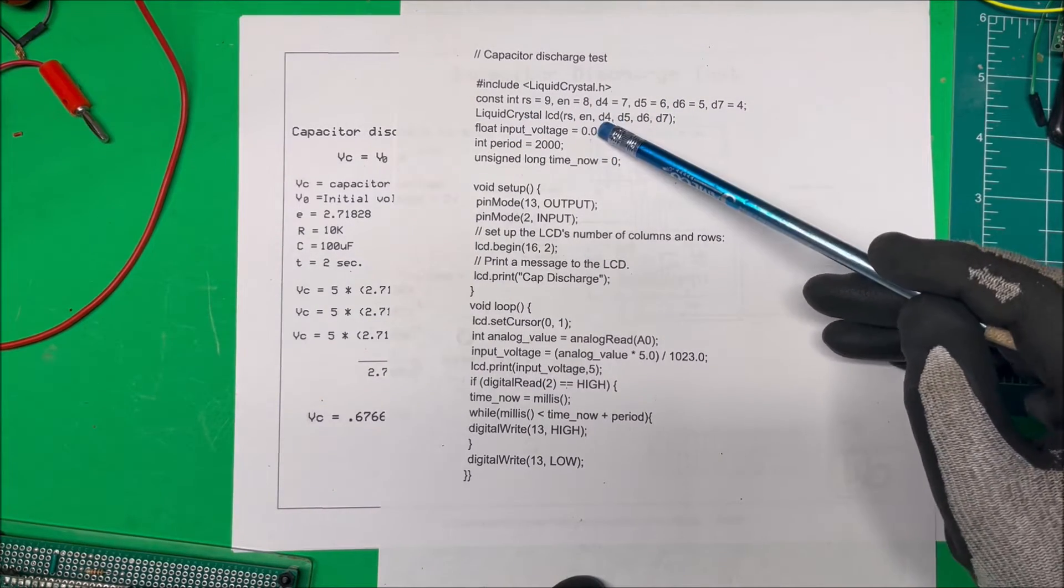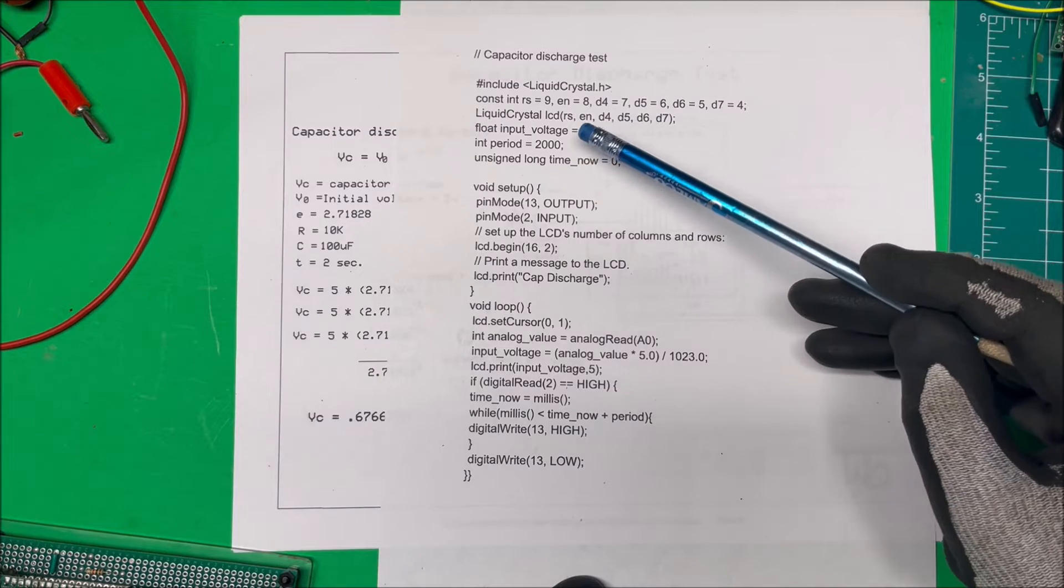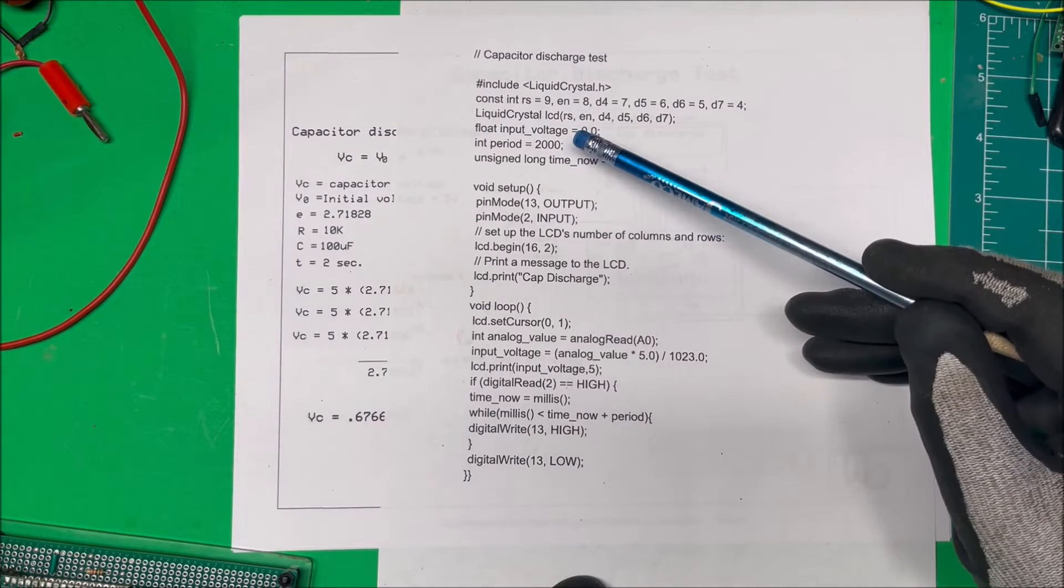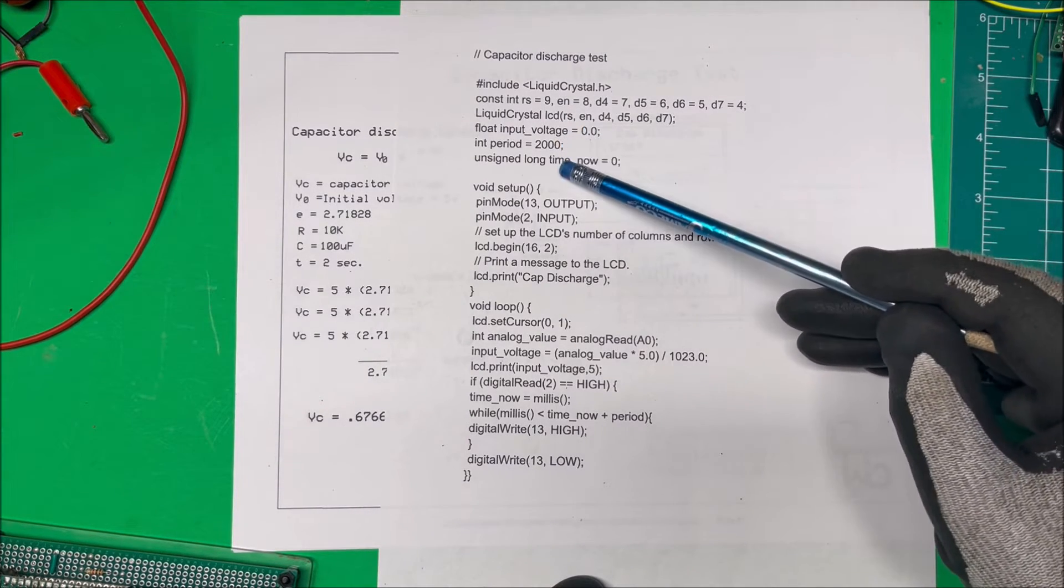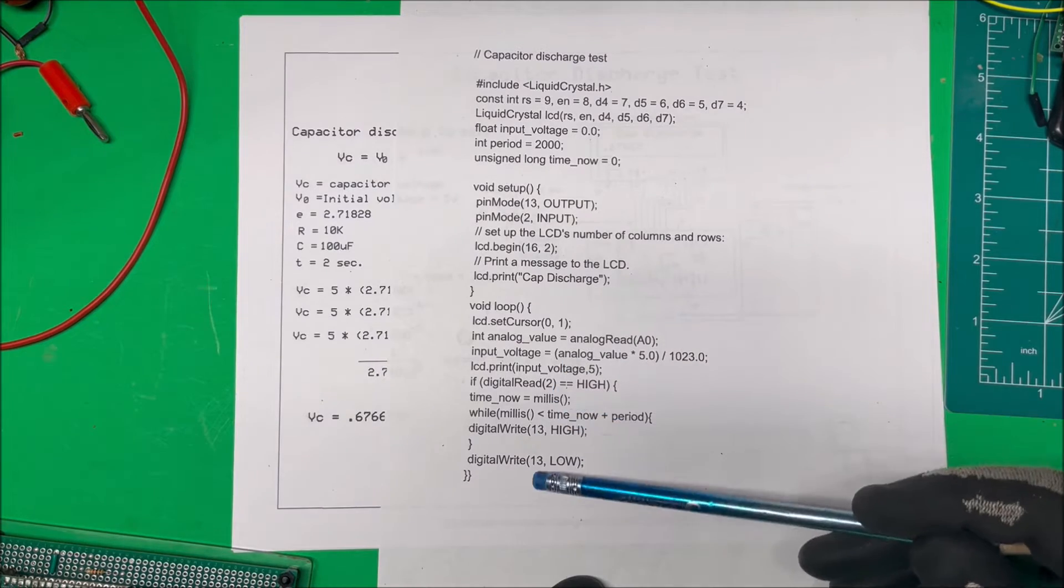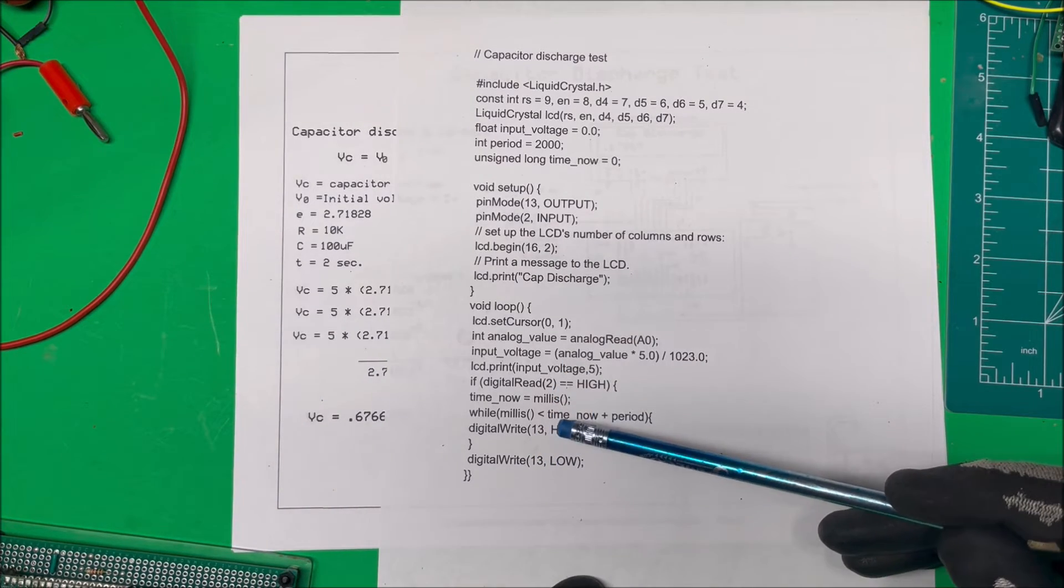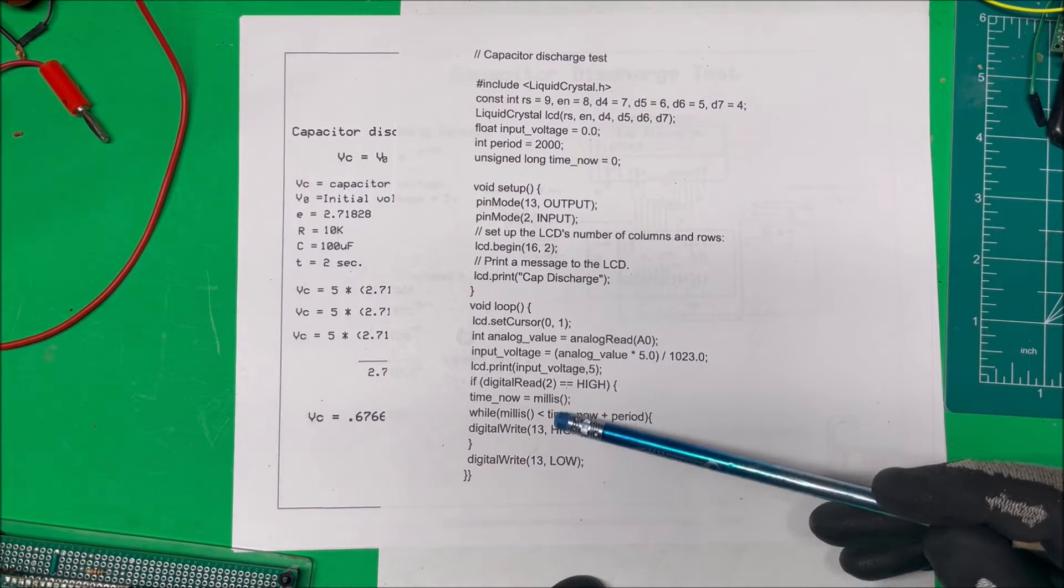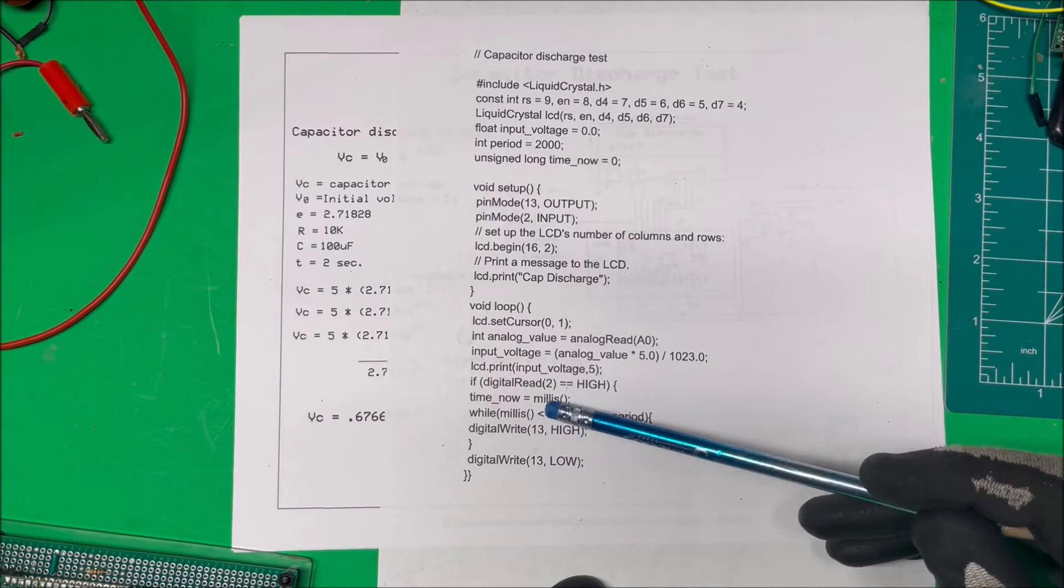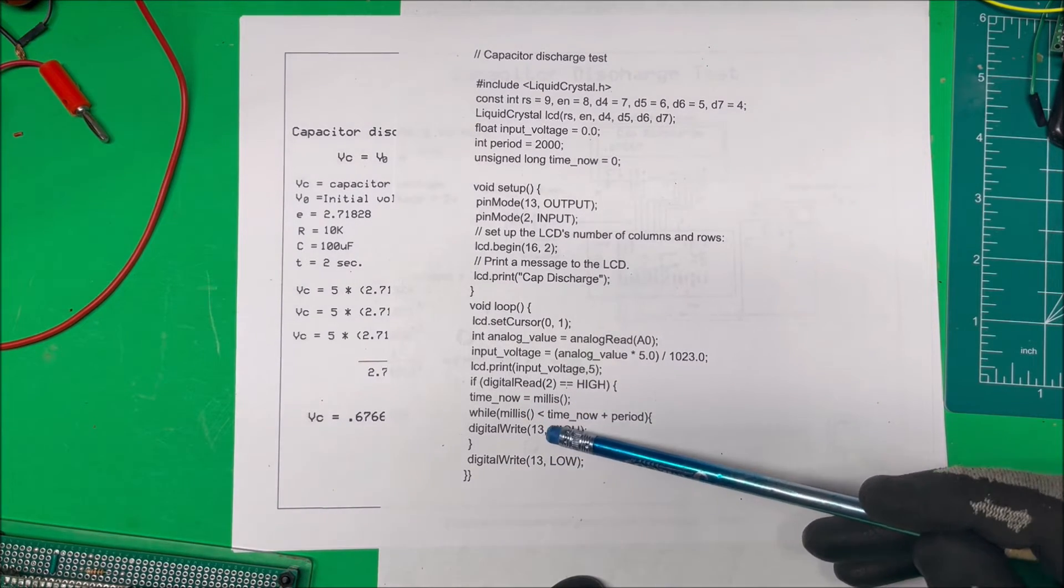And on our float voltage, I'm using float voltage so we can get some decimals, and this time period. And this time now, instead of using down here at the bottom, instead of using a delay, which you can do just two second delay, I'm using milliseconds for my timing.